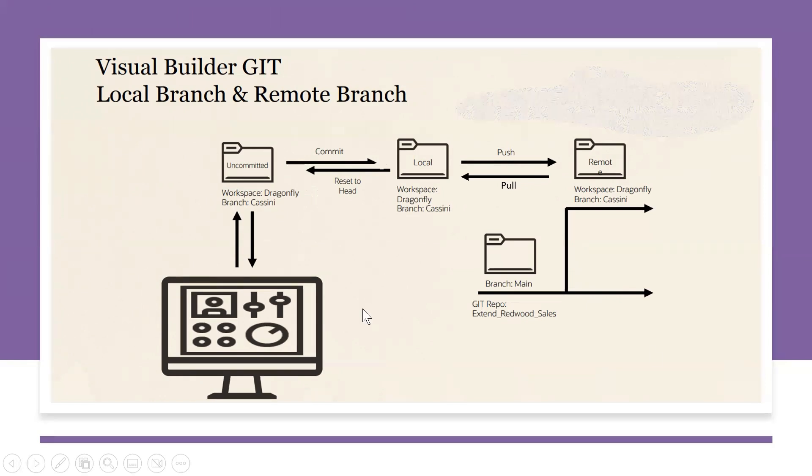So now this diagram helps to understand how Git repository and branching will work. We will have the Git repository and all the code will be in main branch. That is the main or live code. It will be in main branch.